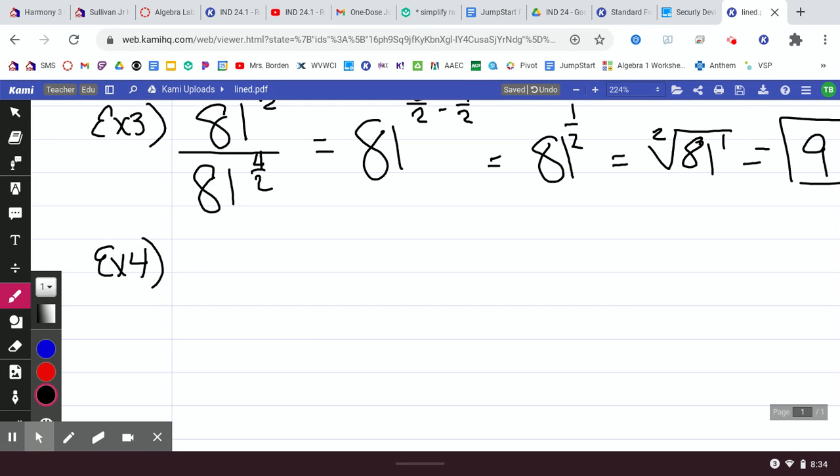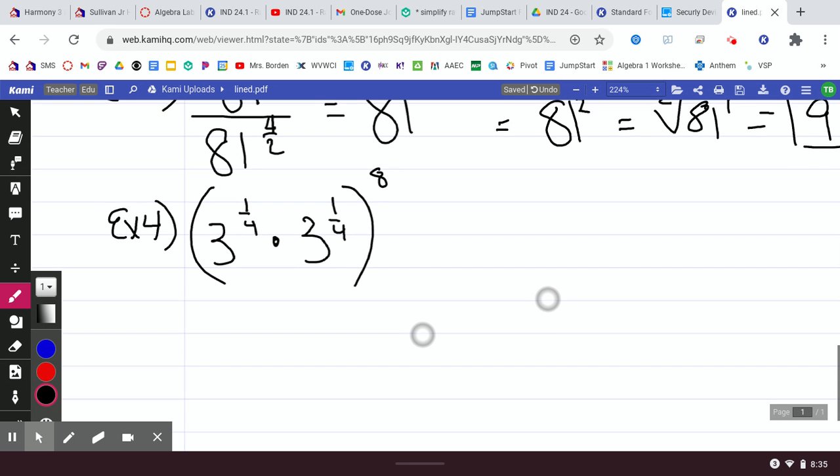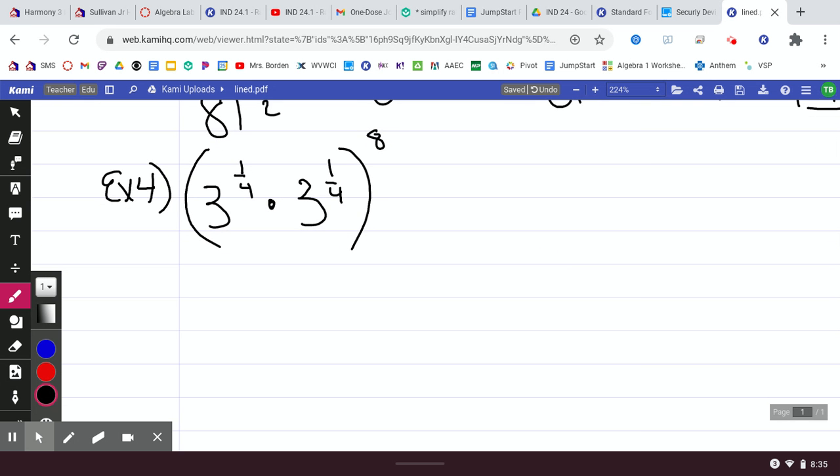So now I want to do a couple here that's going to deal with getting in the negatives. So if we have 3 to the 1 fourth times 3 to the 1 fourth all taken to the power of 8. And you'll have ones like this on your homework. I promise it's not hard at all.